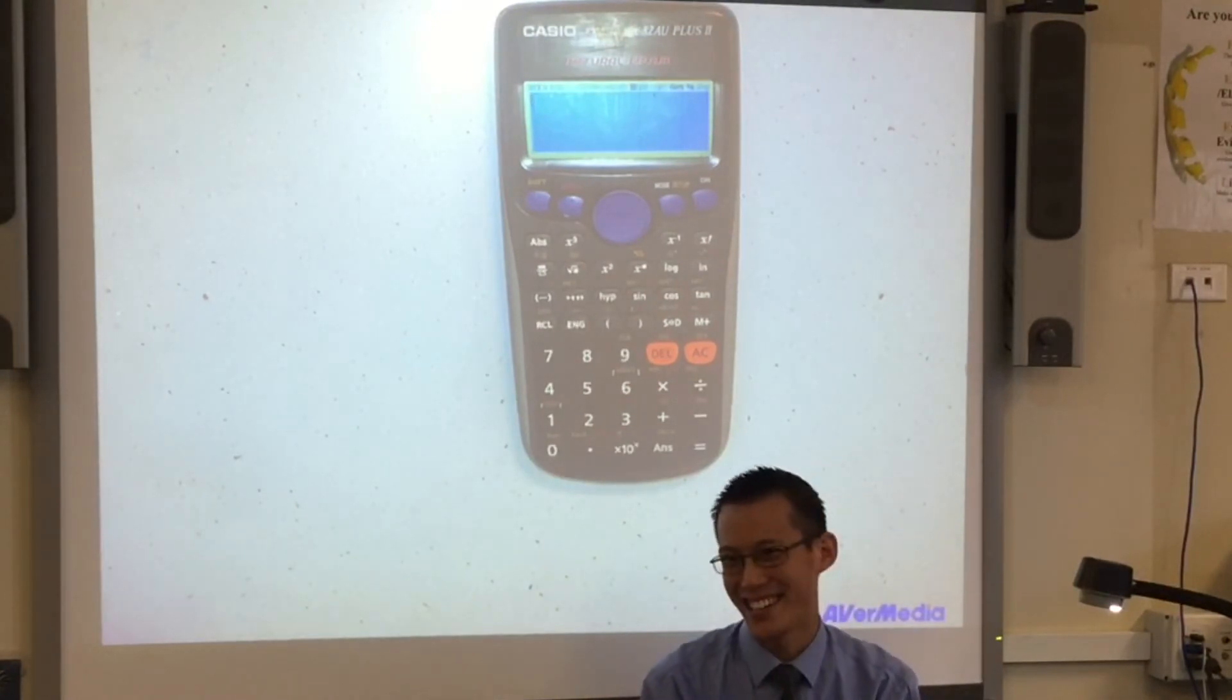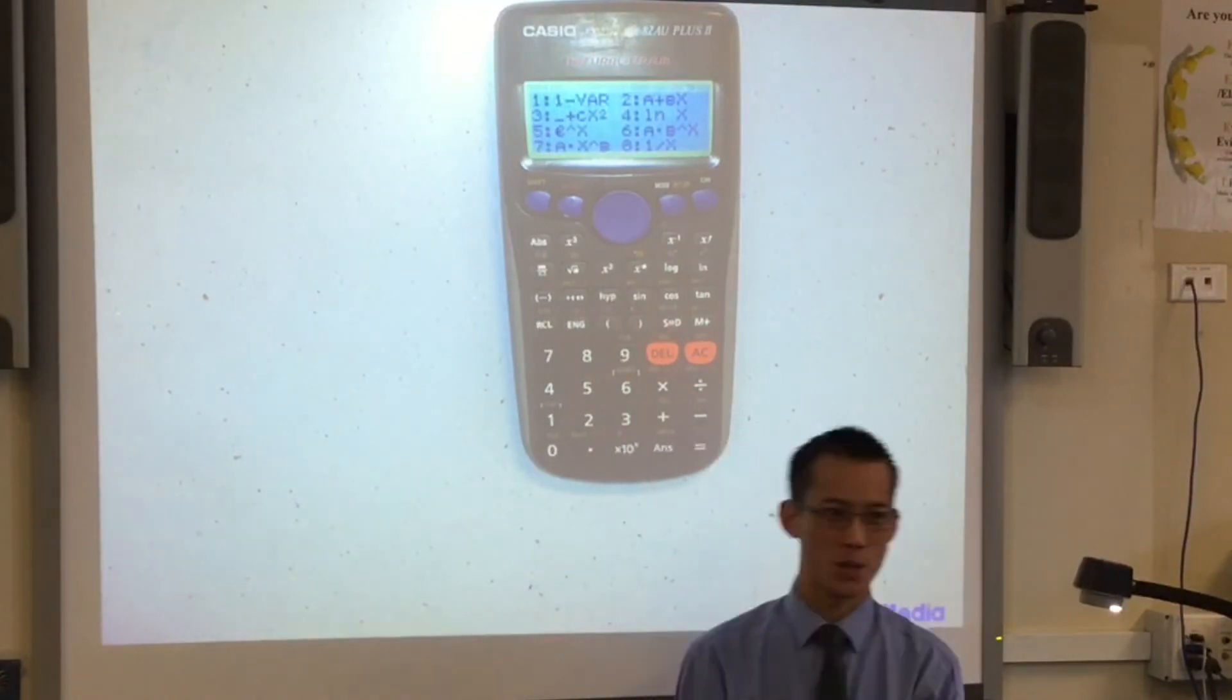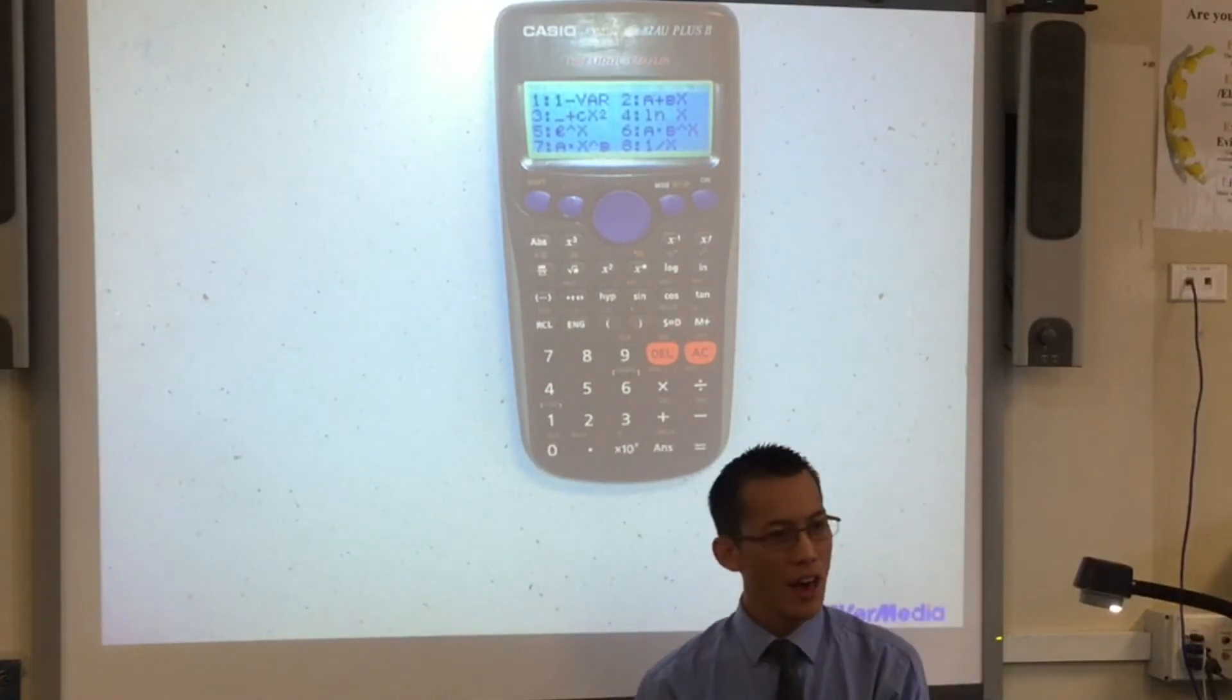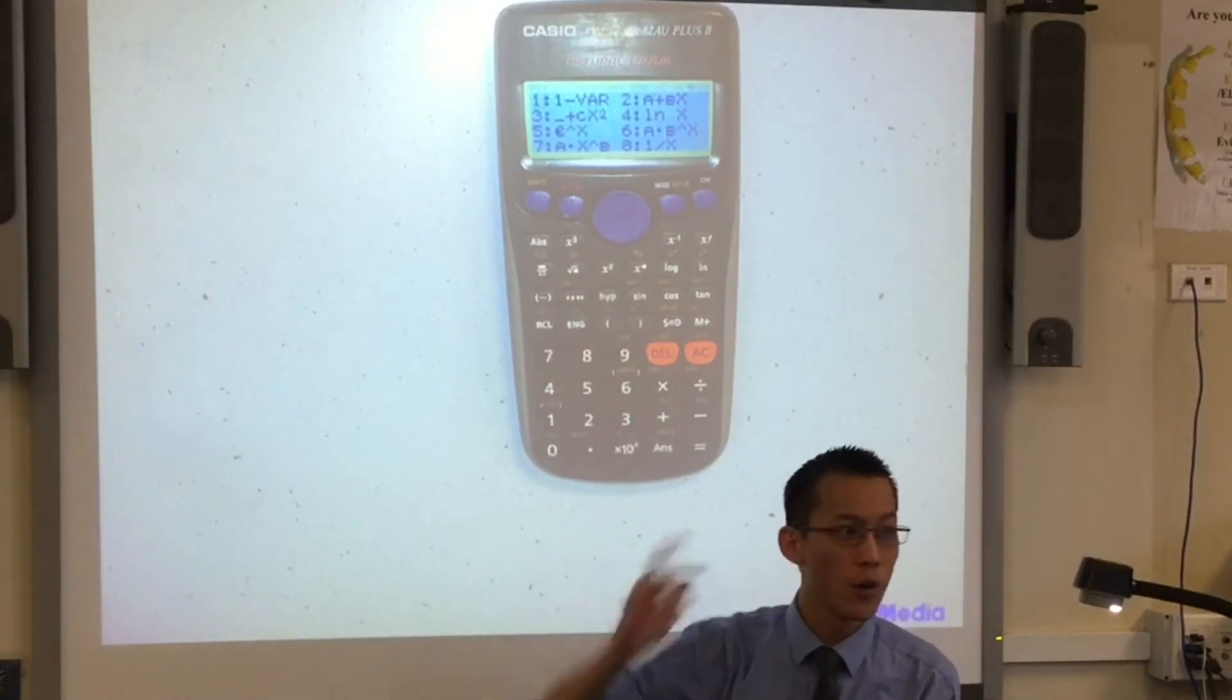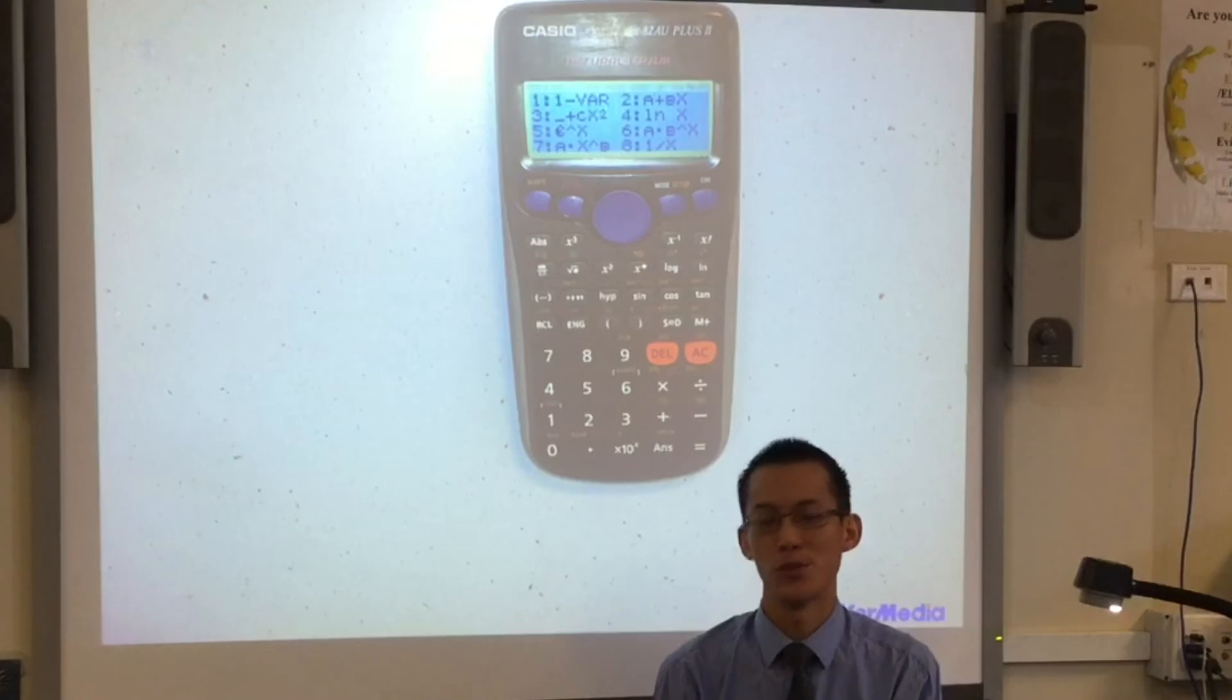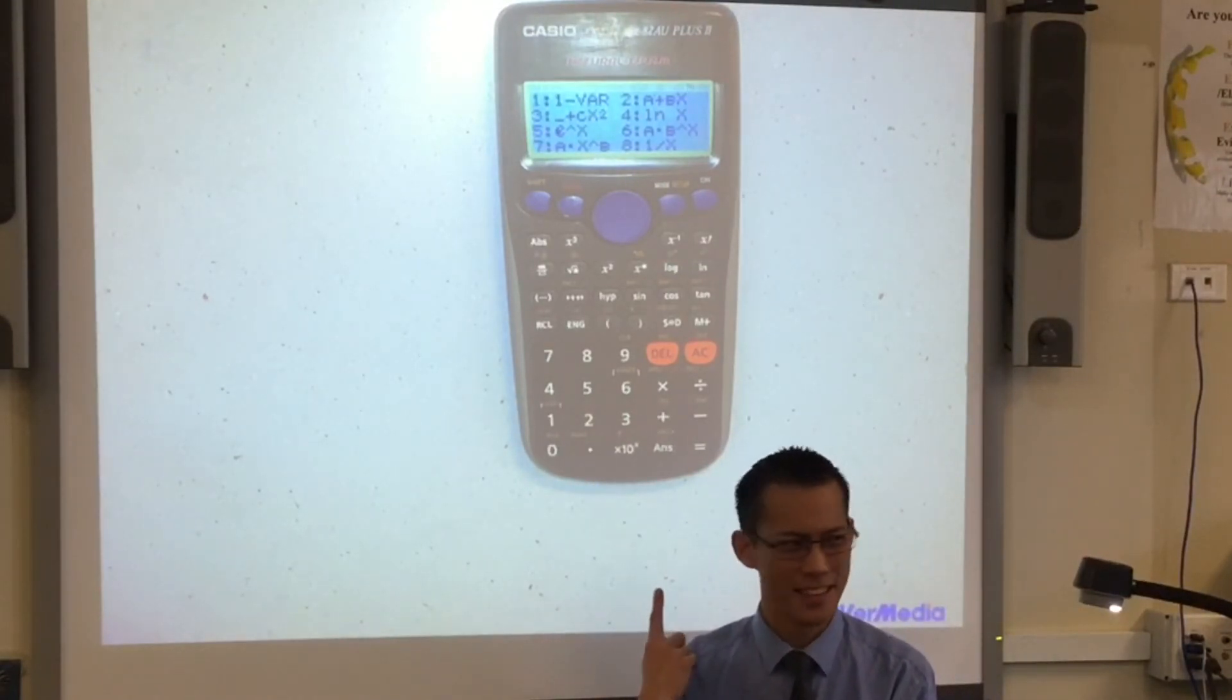Now that we've wiped it clean, we're going to change it to stat mode. I'm going to go Mode and 2 for Stat. Now pause - every other time we've done this before, we've always just said one because we've only ever been dealing with a single variable. But we are not dealing with a single variable anymore. We are using bivariate data.